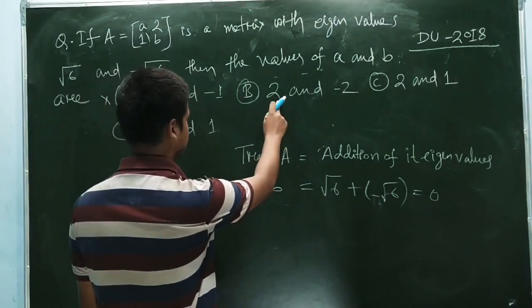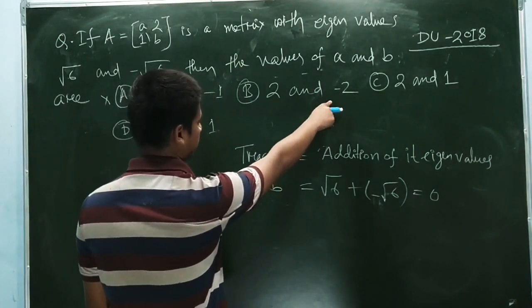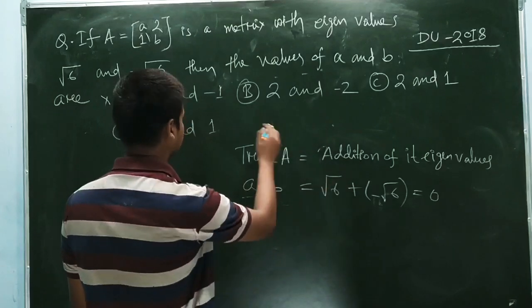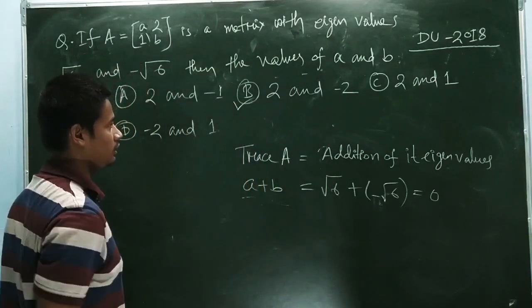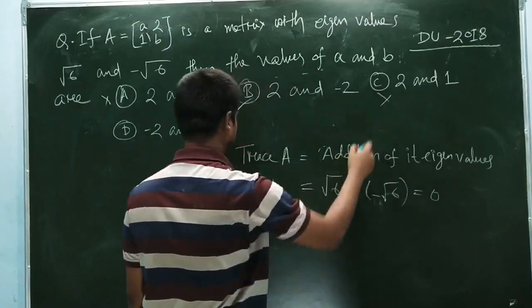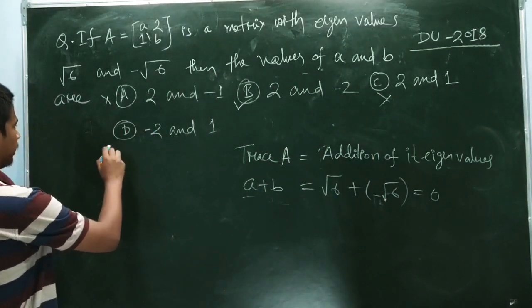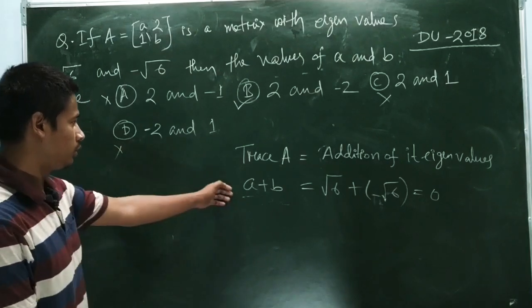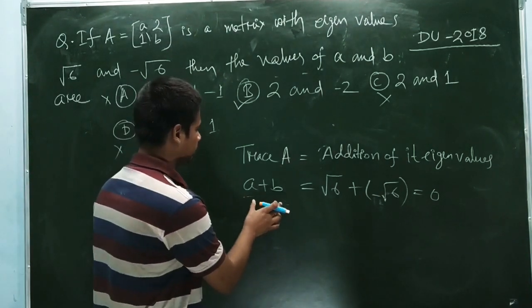2 plus minus 2, which equals 0, so this is the answer. Again, 2 plus 1 is 3, this is not possible. And minus 2 plus 1 is minus 1, this is not possible.